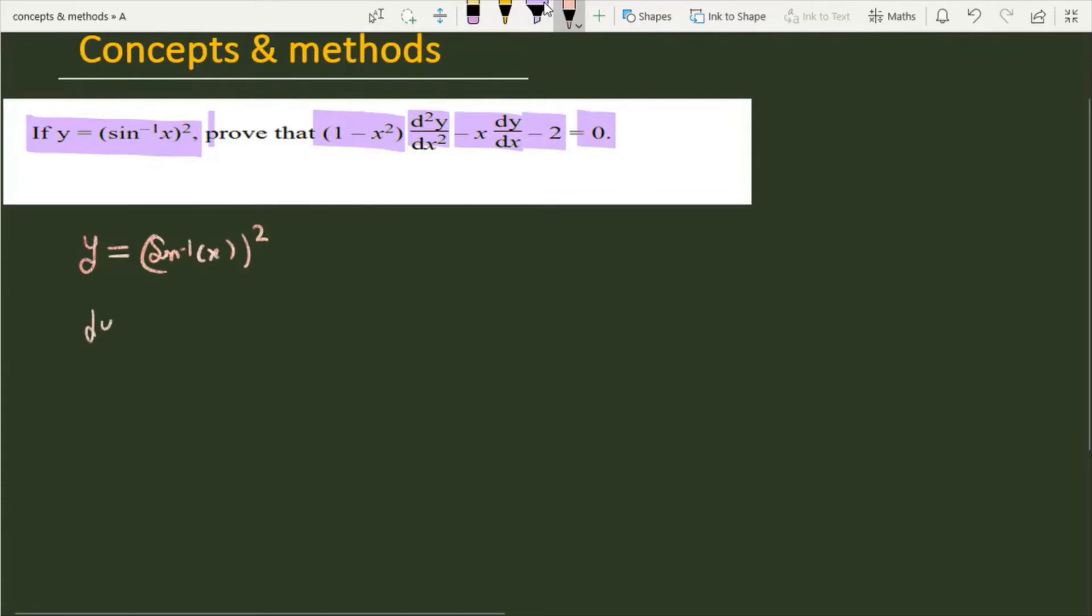And if I will differentiate this function, then dy over dx is equal to twice of sin inverse x upon under root of 1 minus x square. Now it will be 1 minus x square dy over dx and this is equal to 2 of sin inverse x.